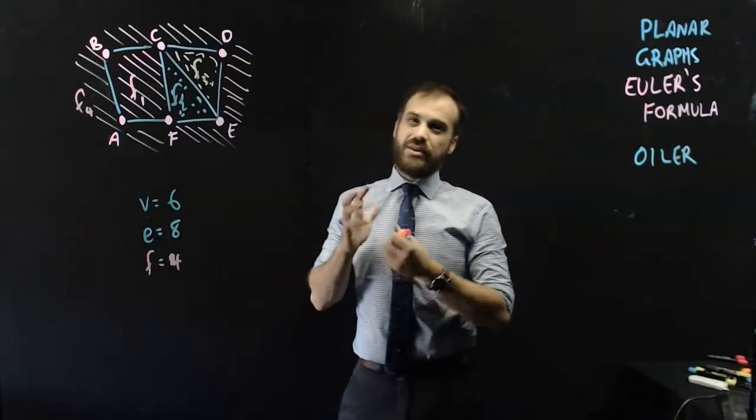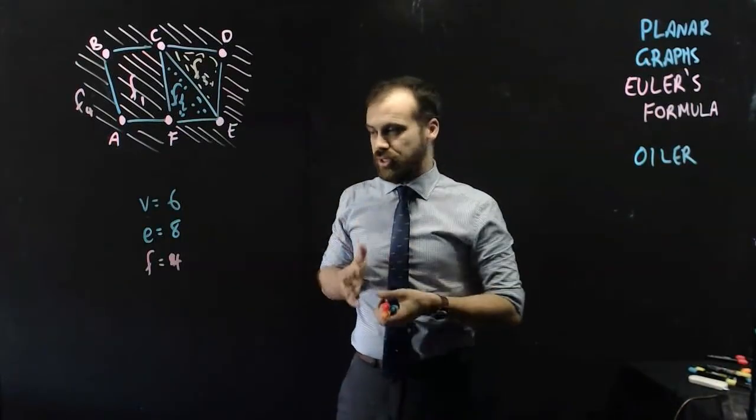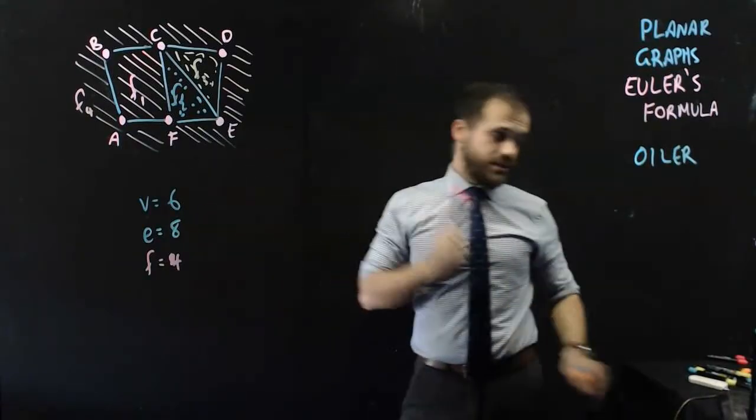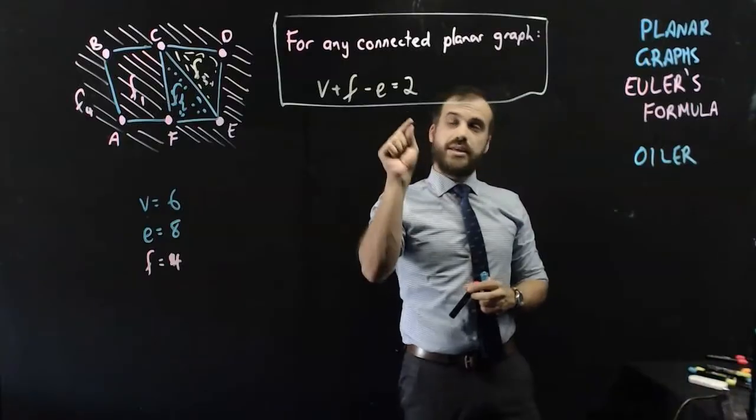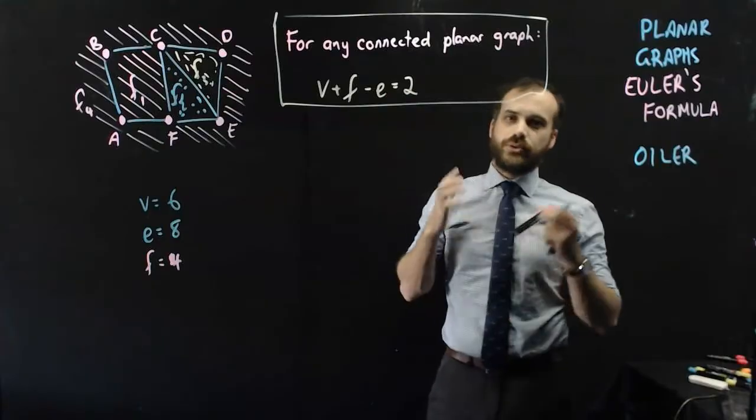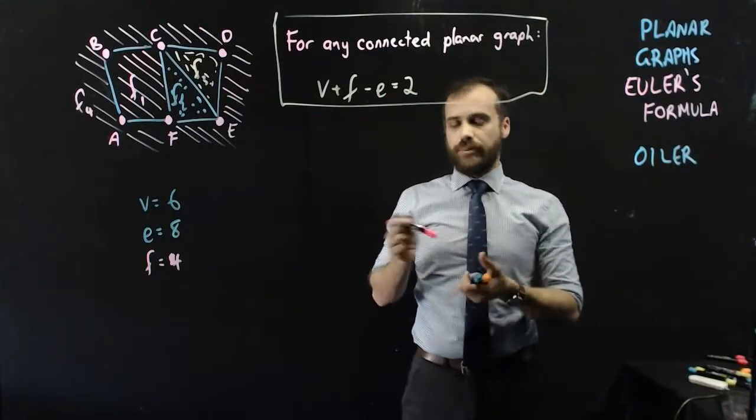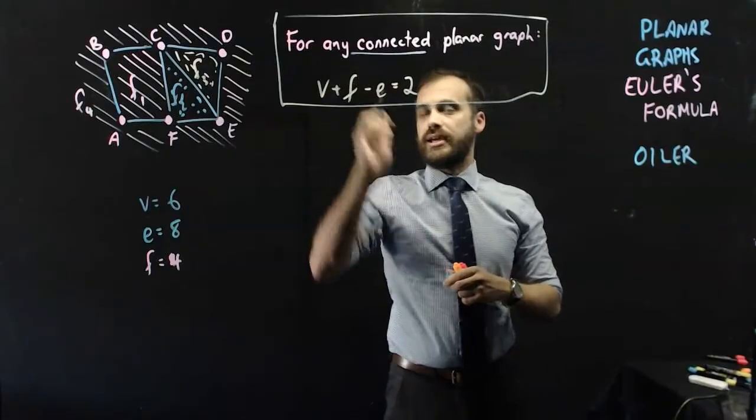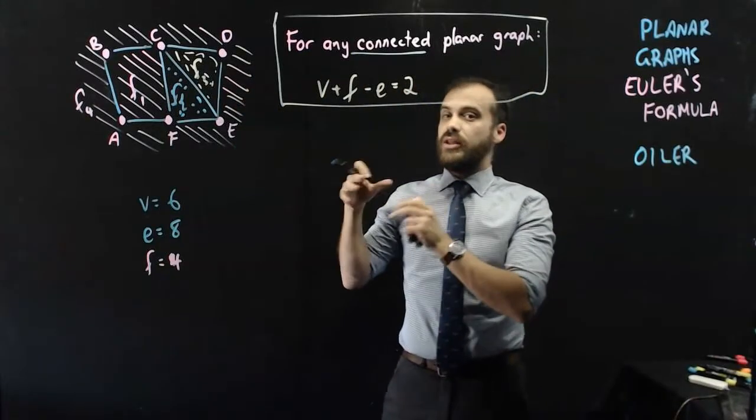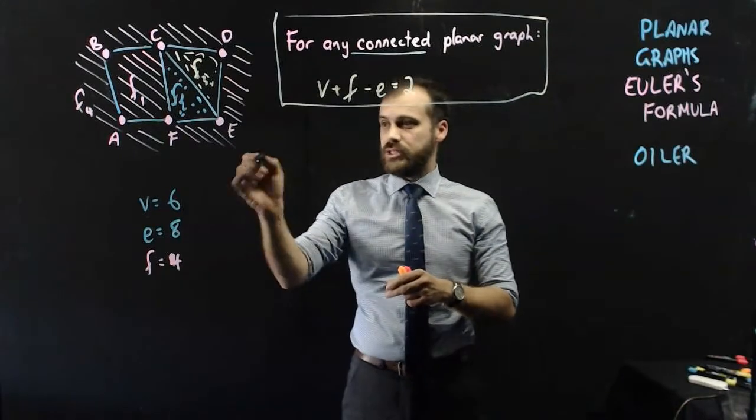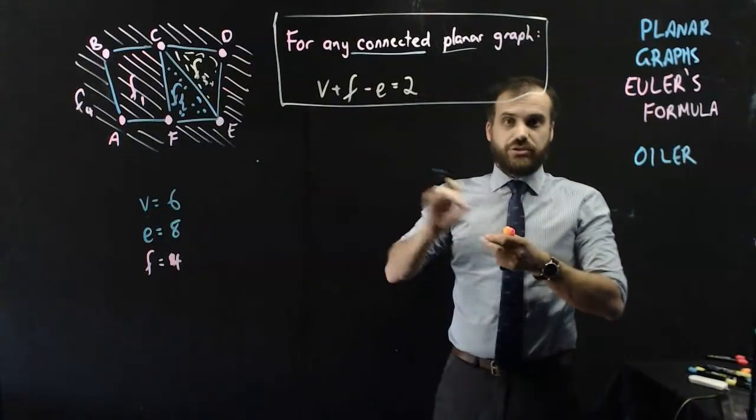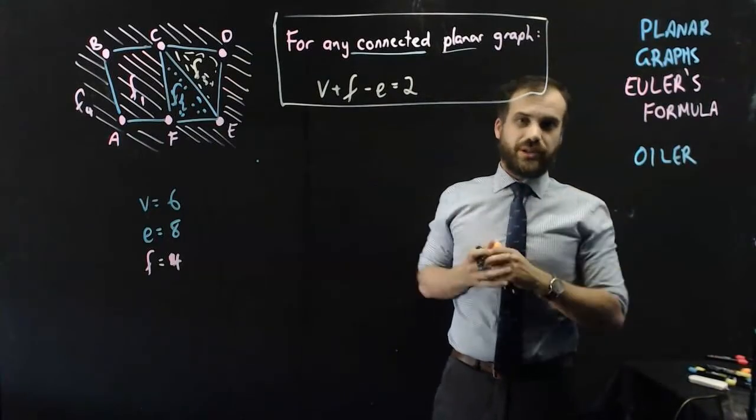So with these three numbers we get this really, really, really nice formula. So what Euler said was this: For any connected planar graph, V plus F minus E equals two. Okay, so a couple of important words here. For any connected, so that means that all of the vertices are connected to the other vertices in some way. You can't have just one isolated vertex out here, this won't work. Planar graph, none of the edges cross over. We've already talked about what a planar graph is.